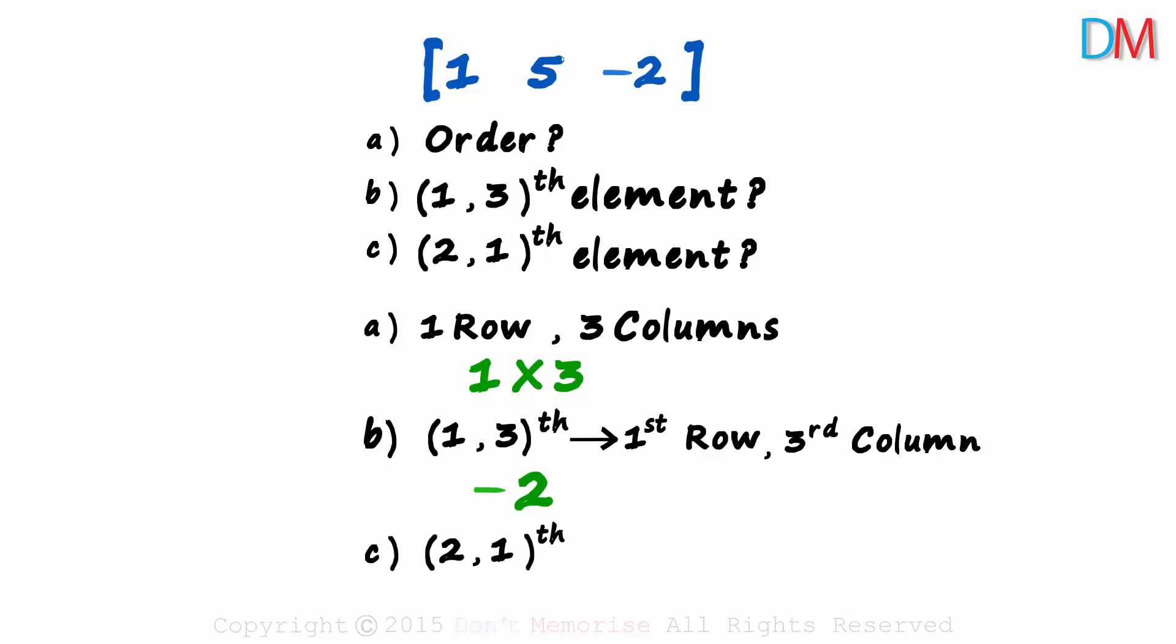And what about the 2, 1-eth element? Second row and the first column? But this matrix has just one row. So the 2, 1-eth element does not exist.